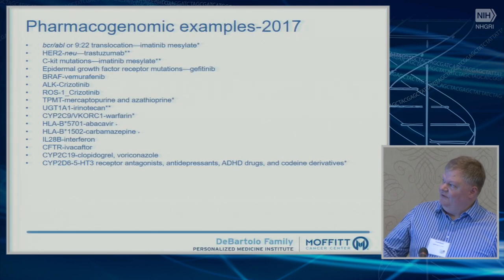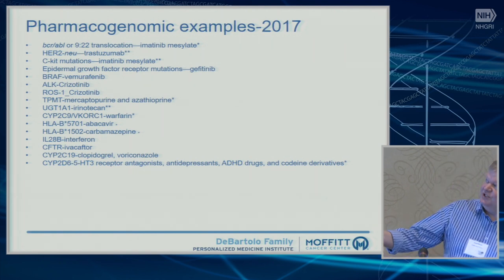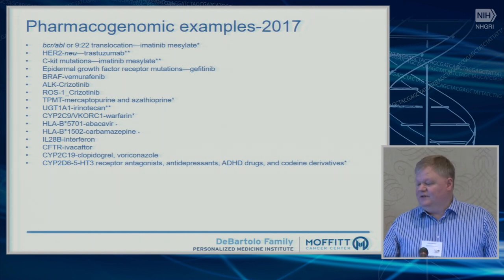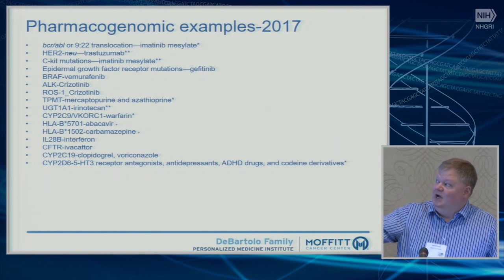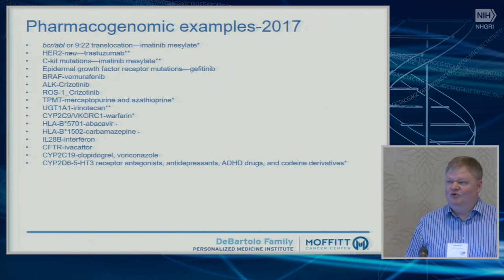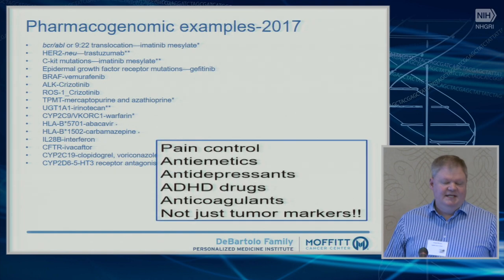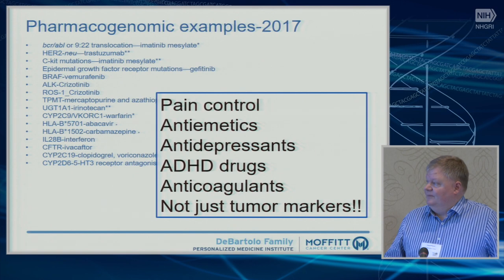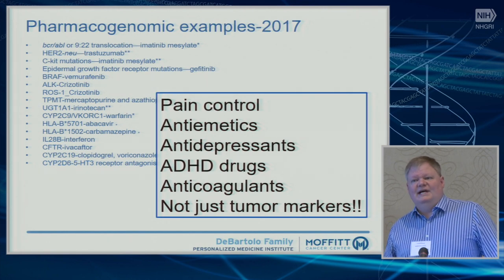We have all these great pharmacogenomic examples — some are somatic examples, tumor variations usually associated with some drug that has come to market, and a lot of germline variables. In oncology, there's been a lot of focus with hematology oncology fellows around the tumor markers. It's hard to prescribe a drug if you don't know what test to order, and hard to get paid if you don't have to order the test. But there are all these other elements in the non-oncology space that are very relevant — pain control, antiemetics, antidepressants — also relevant to how you manage patients.